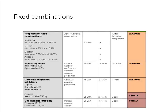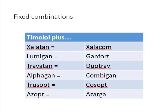Fixed combination drugs contain timolol plus one other drug. For example: timolol plus Xalatan is Xalacom; timolol plus Lumigan is Ganfort; timolol plus Travatan is DuoTrav; Alphagan and timolol is Combigan; Trusopt and timolol is Cosopt; and Azopt and timolol is called Azarga.